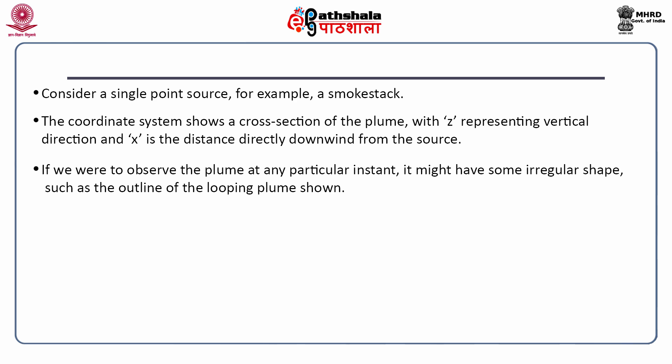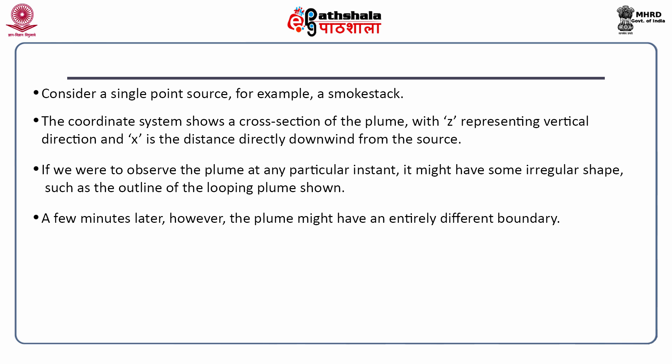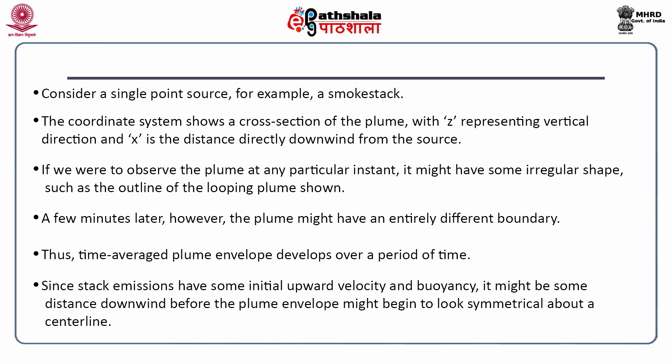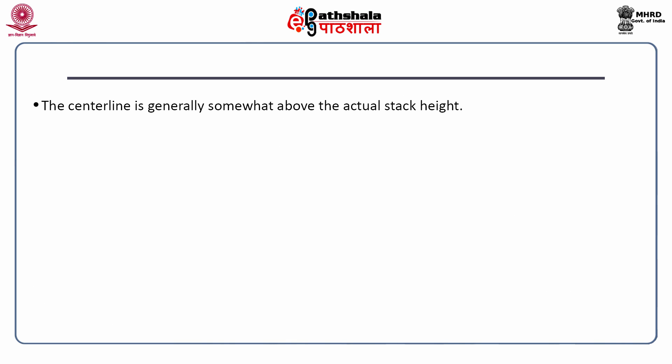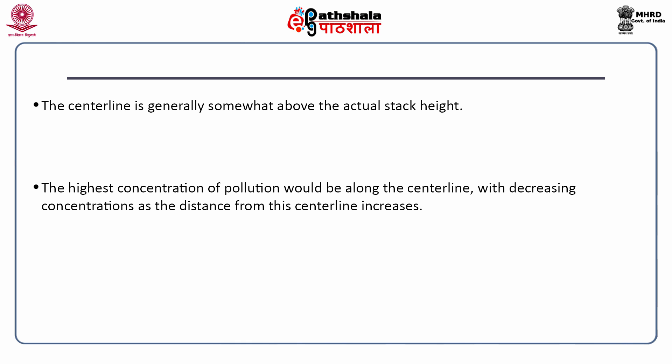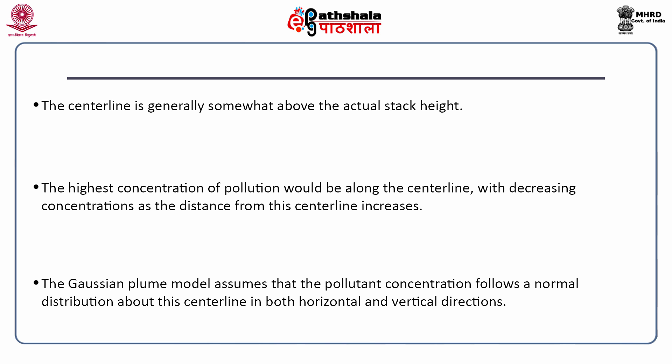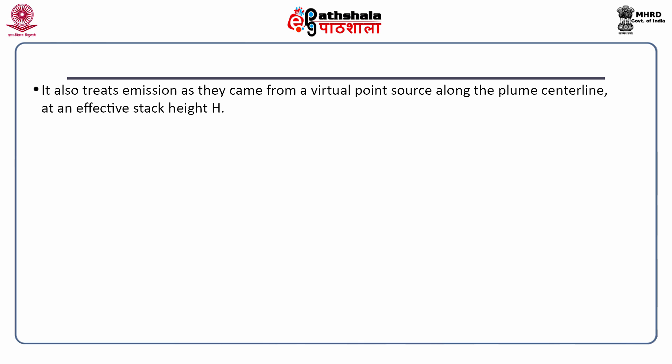If we were to observe the plume at any particular instant, it might have some irregular shape such as the outline of a looping plume; a few minutes later, the plume might have an entirely different boundary. Thus, this time-averaged plume envelope develops over a period of time. Since stack emissions have some initial upward velocity and buoyancy, it might be some distance downwind before the plume envelope begins to look symmetrical about a centerline. The centerline is generally somewhat above the actual stack height. The highest concentration of pollution would be along the centerline, with decreasing concentrations as the distance from the centerline increases.